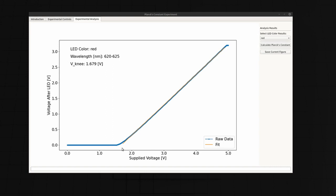The selected region gives us a good fit over the largest voltage range where the LED is turned on. From this result, we obtain a knee voltage of 1.679 volts.